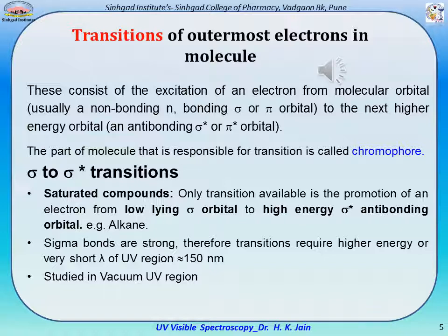Sigma→sigma* transition belongs to saturated compounds, involving promotion of an electron from a low-energy sigma orbital to a high-energy sigma* anti-bonding orbital — for example, alkyl compounds. Sigma bonds are strong, so these transitions require higher energy, higher frequency, or lower wavelength (approximately 150 nm) of the UV region. Therefore, such transitions are studied in the vacuum UV region.